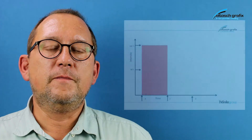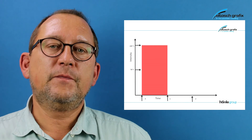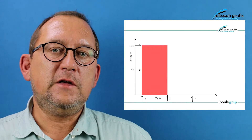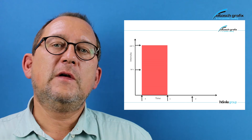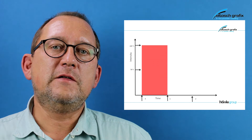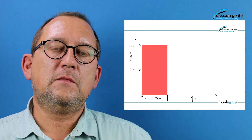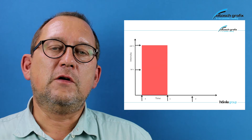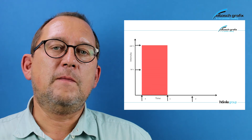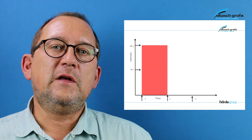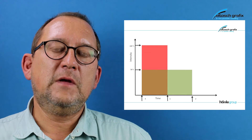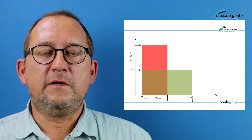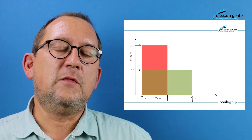Finally, I would like to explain the value UV dose, which is intensity integrated over time. That means if you have a highly intense UV source and a short exposure time, you have a certain UV dose. If your light source has half of the intensity but you double the exposure time, you will have the same UV dose.